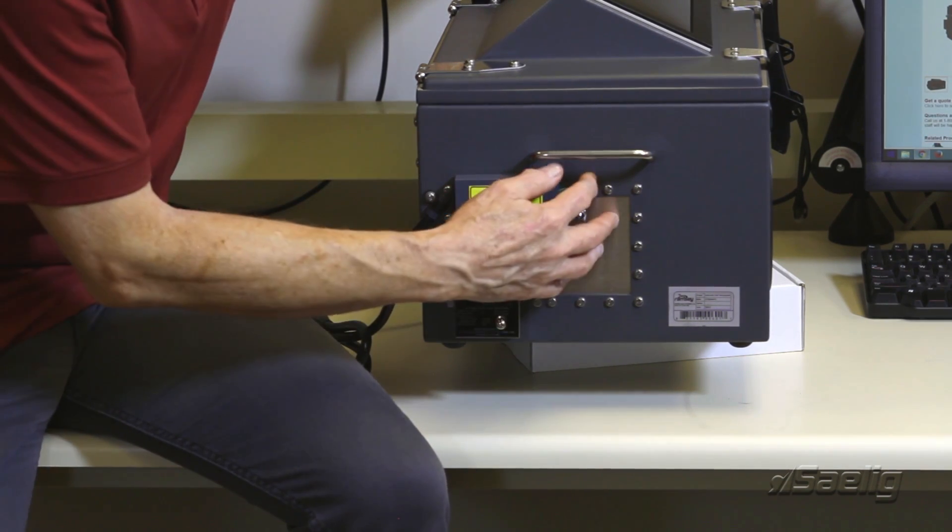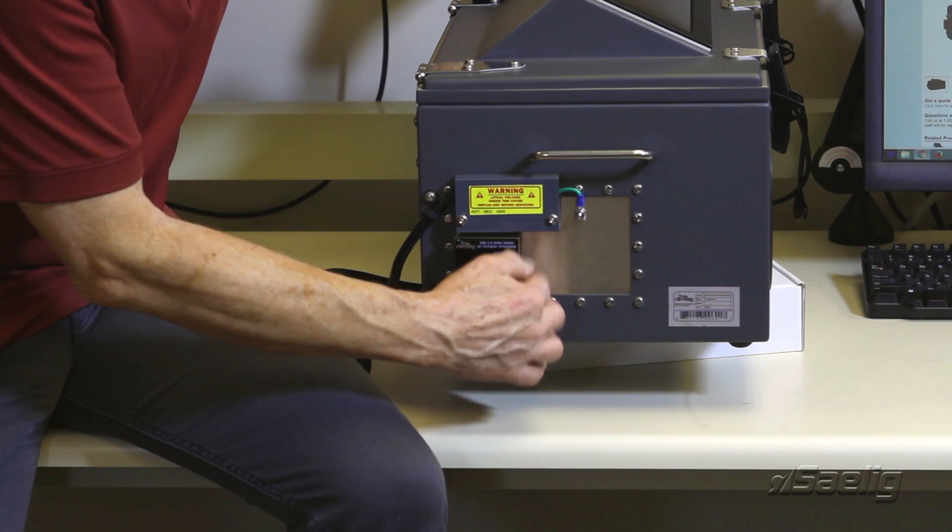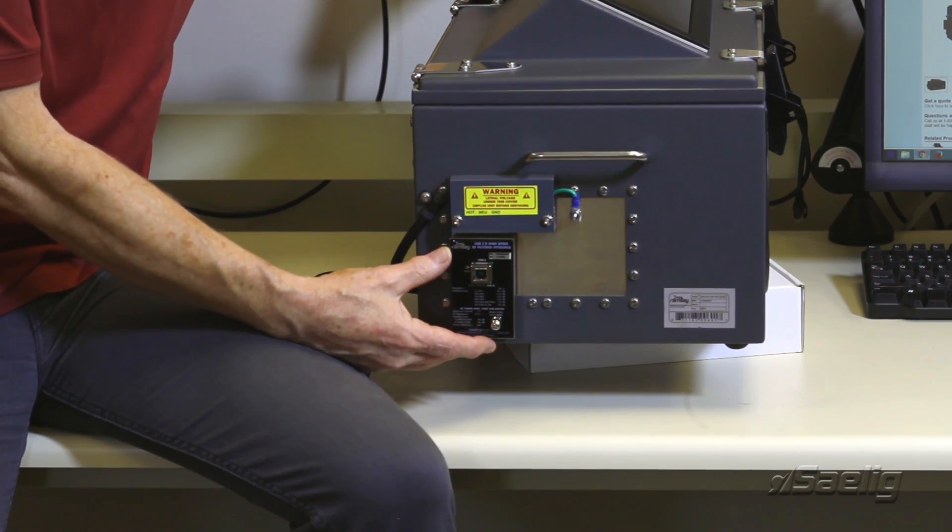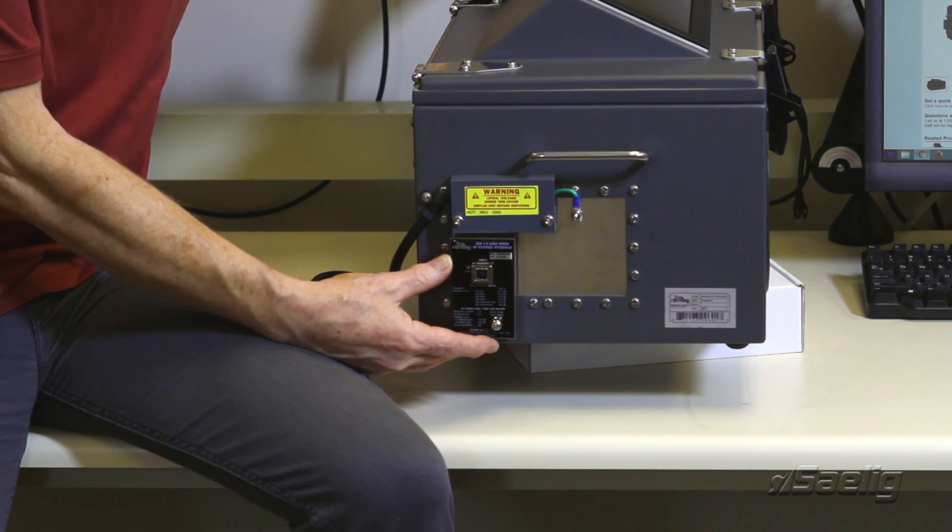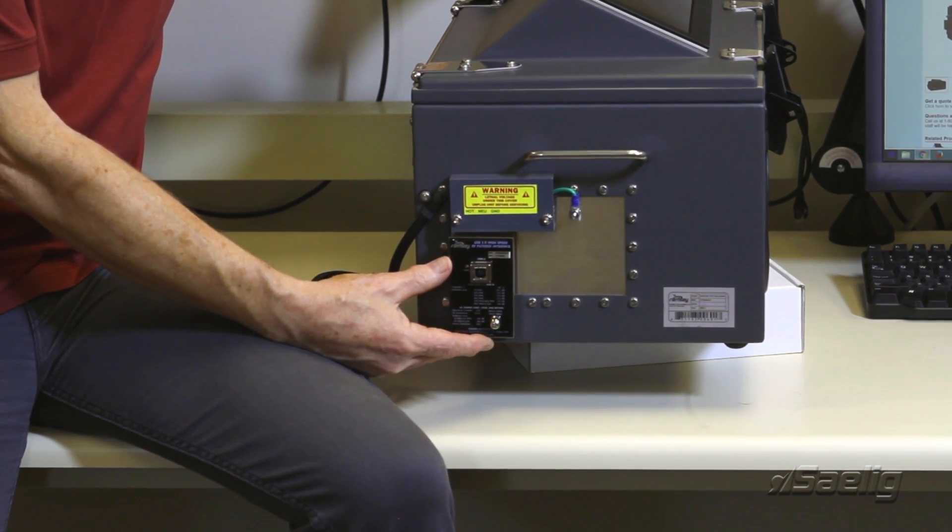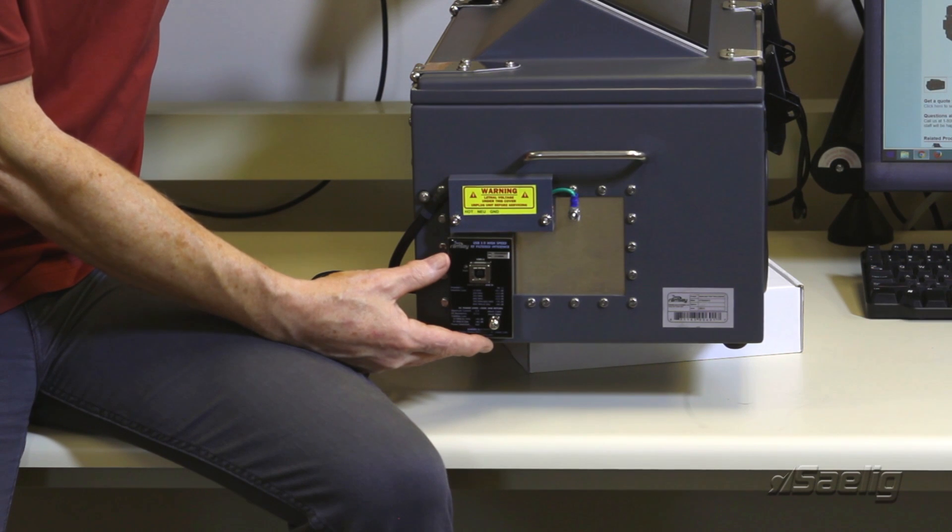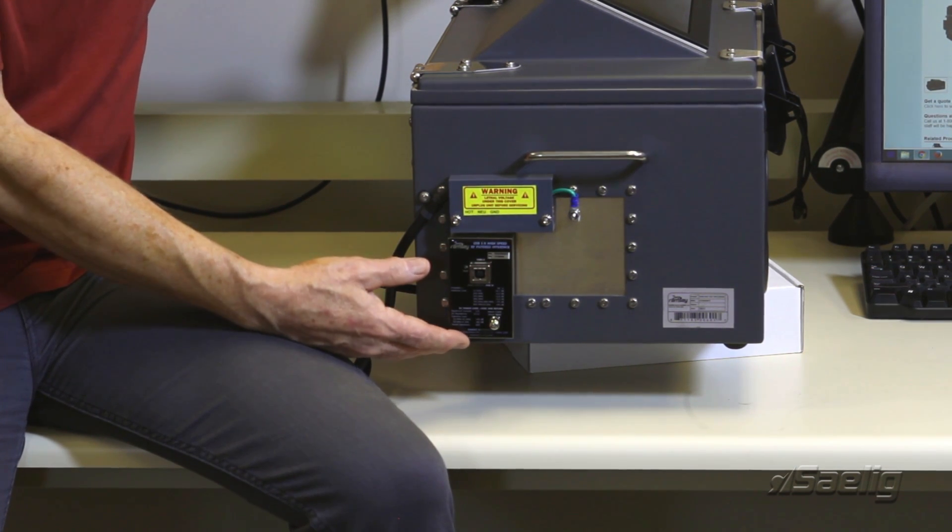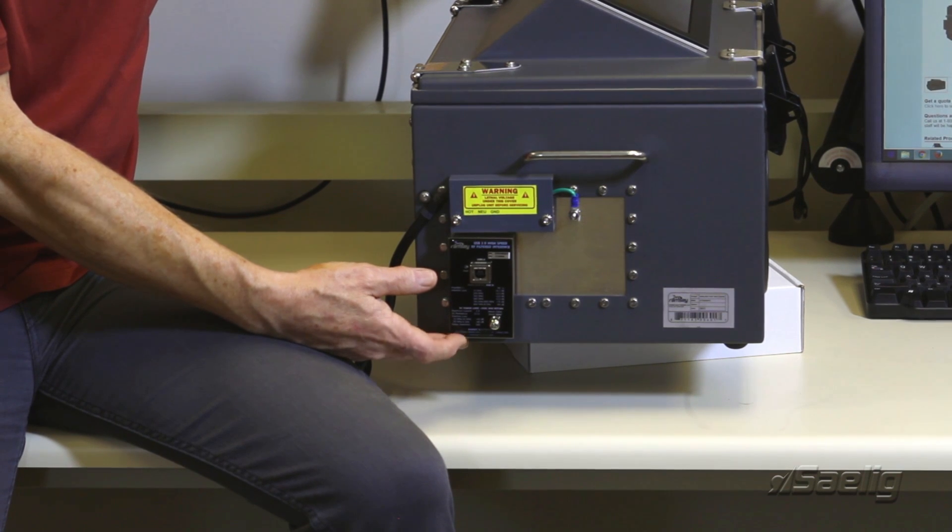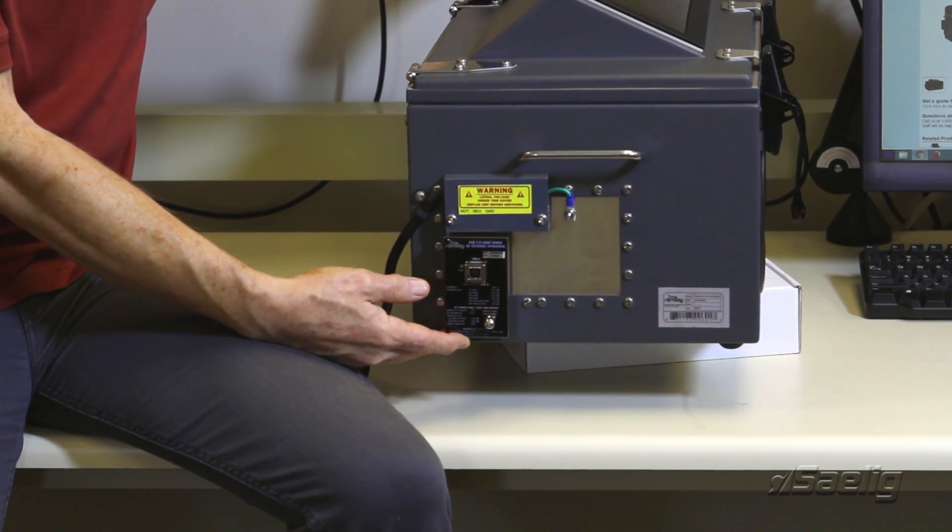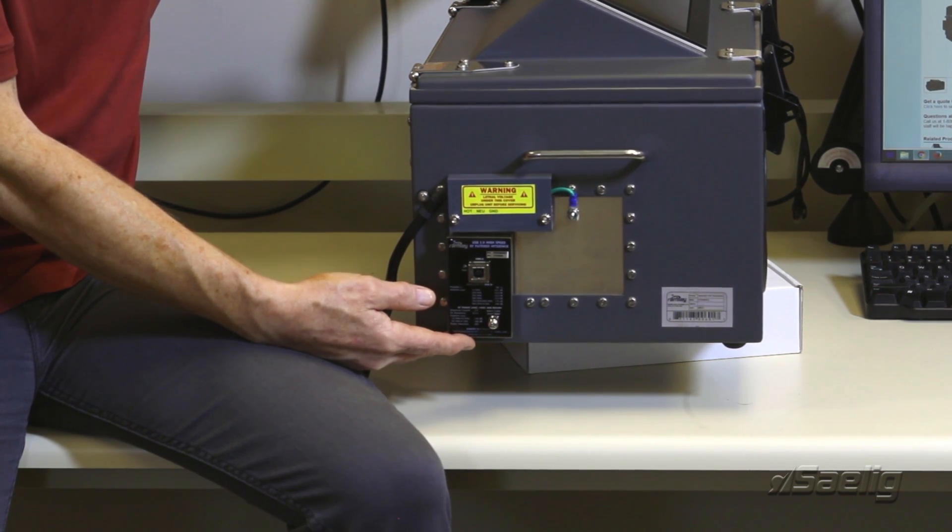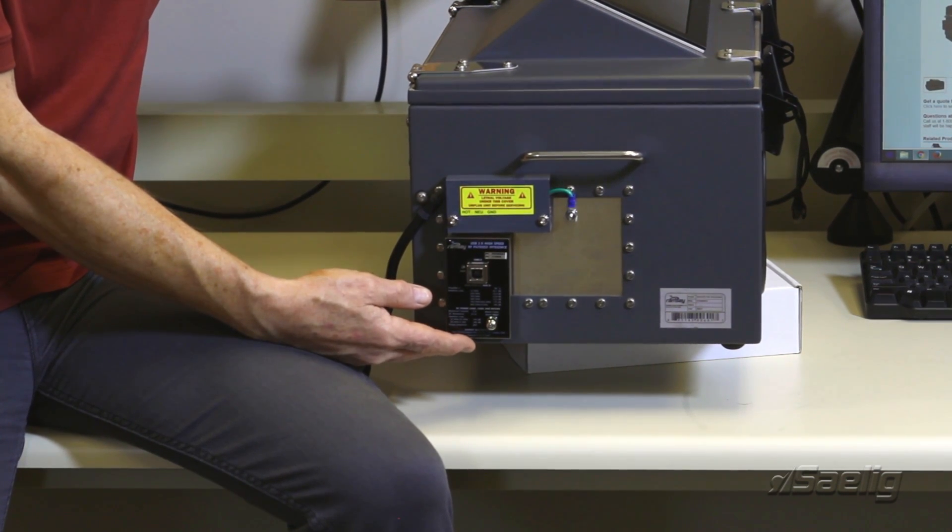And then on the side panel this is where different options can be added depending on what sort of RF or data IO you want to provide. There's a whole variety of different filtered connector options that can be added to this. Check our website or Ramsey's website for the details on which connectors you can have, but they've pretty much got all the bases covered.